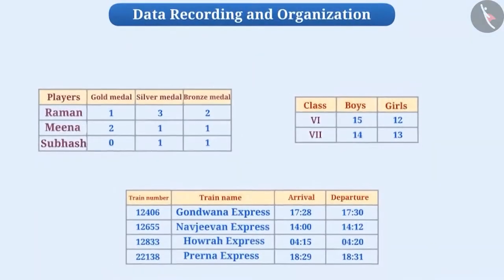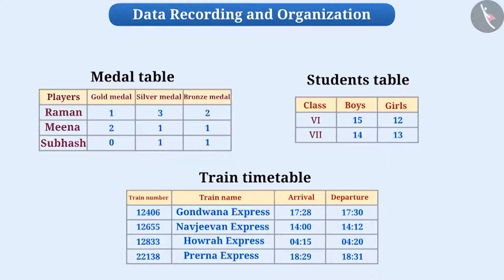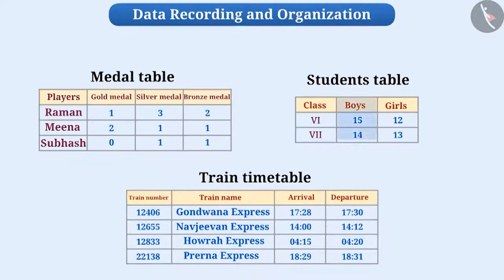In our daily life, we see various types of tables, such as a table containing the names of the players and the number of medals they have won, number, name and time of arrival and departure of trains, and a table showing the number of boys and girls in classes. All these tables provide us data.